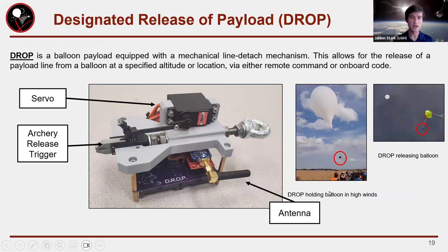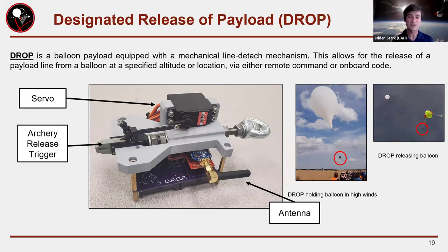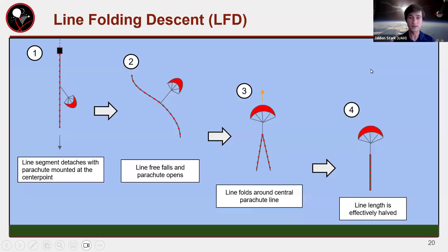We use a special cut-down device — not hot-wire cut-downs, but archery release triggers. If you're familiar with archery, these triggers hold a lot of weight but can be adjusted to release with a tiny amount of force, making them very reliable and not prone to premature release. The centrally mounted parachute causes the line to fold, reducing its descent size so it doesn't come down quite as tall as it went up.